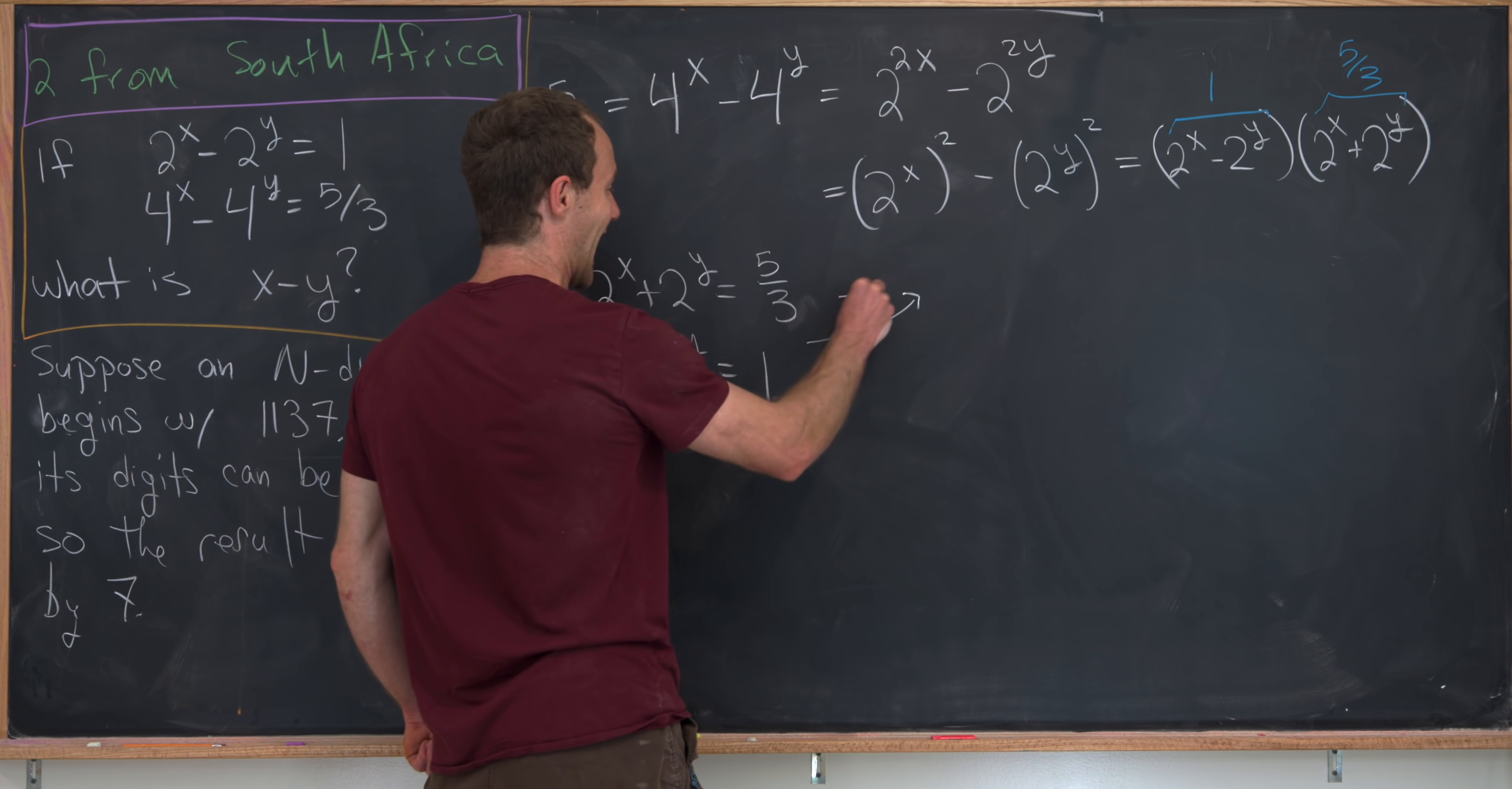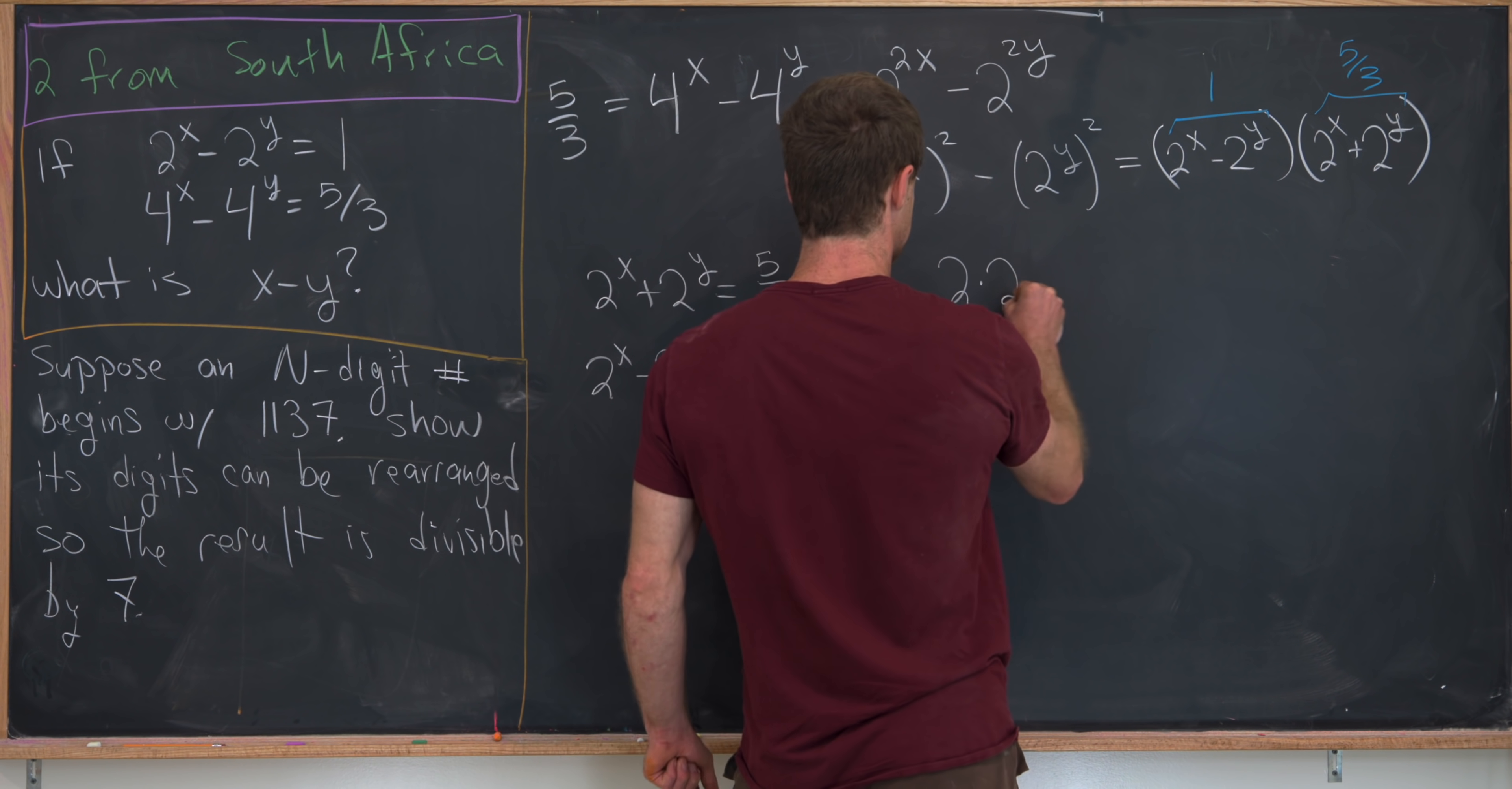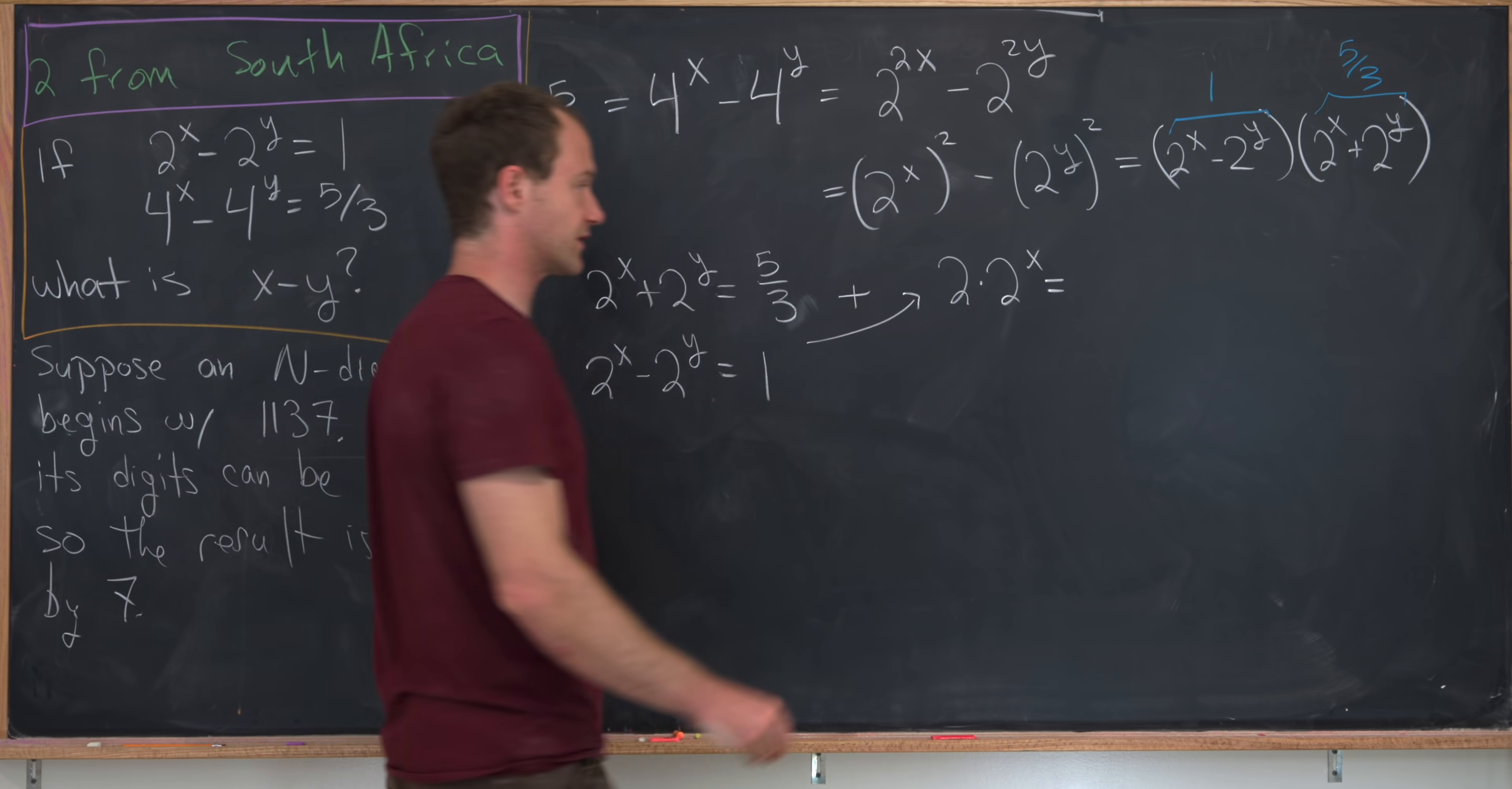So maybe we could add these two equations. And we'll see that we get 2 times 2 to the x is equal to 5 thirds plus 1, which is 3 thirds, so that is 8 thirds.